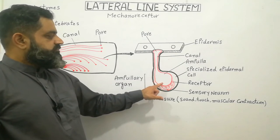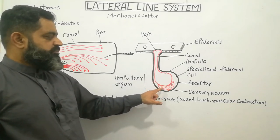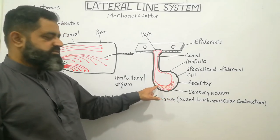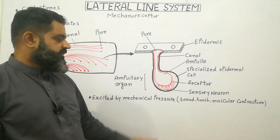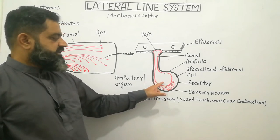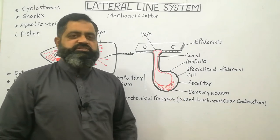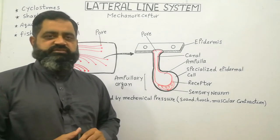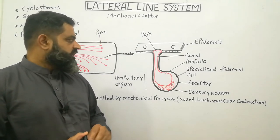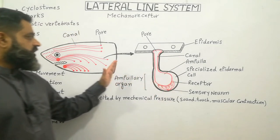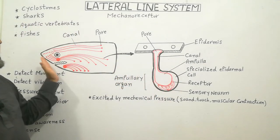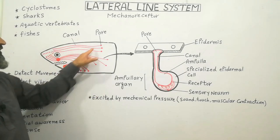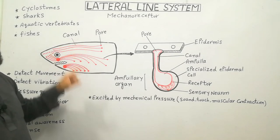Just below the epidermal cell or ampulla, there are receptor cells, as you can see in the diagram. These receptors detect different stimuli and send signals towards sensory neurons, which transmit the impulses towards the central nervous system. This lateral line system is present all over the anterior side of the body, with pores shown as dots and lines representing canals.